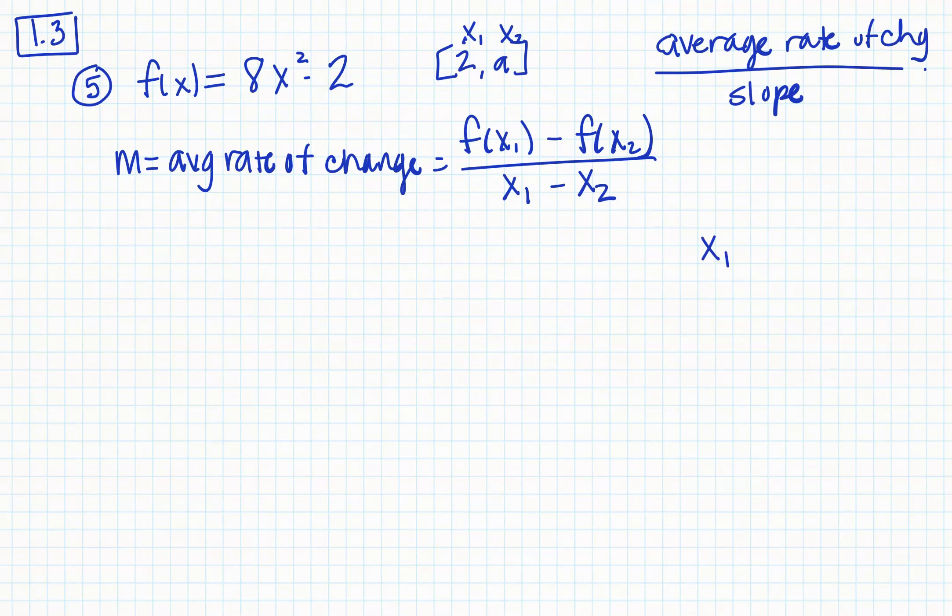So we're going to have to plug in a little bit. If x1 is equal to 2, then that means f of 2 would be equal to 8 times 2 squared minus 2. So that would be 8 times 4 minus 2. So 32 minus 2, so 30. So that means f of x1 is equal to 30.